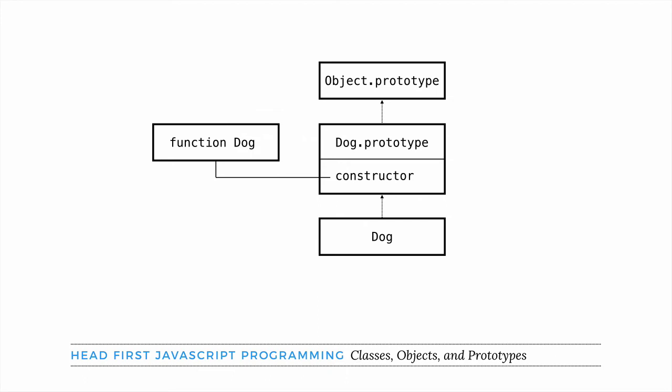Let's take a look at how we can write the diagram for dogs to show how the inheritance works and see the relationship between the constructor function or class, the prototypes, and instances. This works the same way as before — whether you use a class or an old-fashioned constructor function, this part does not change. We create a constructor function — in our case, function dog — use it to create a dog object, which inherits from the dog prototype, which inherits from the object prototype. The dog prototype keeps a pointer to the constructor function. It works the same way for a class, with only very subtle differences. Remember that underneath the covers, a class is really still a constructor function, though JavaScript can distinguish between the two.